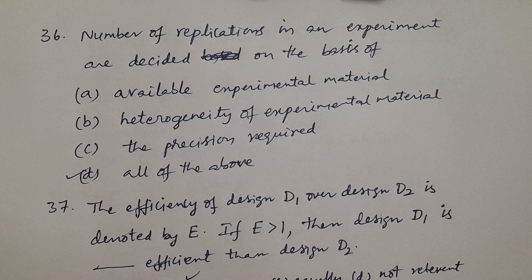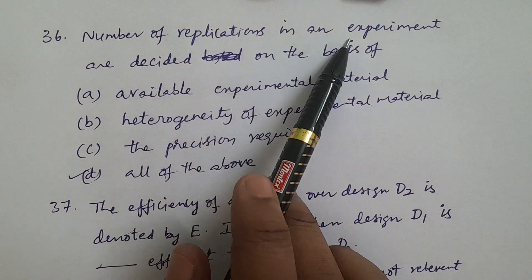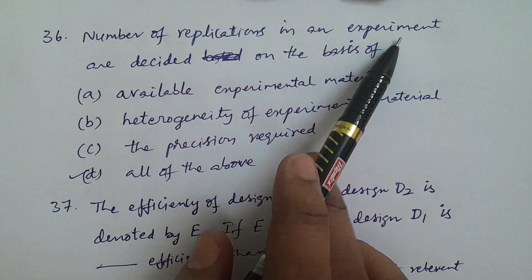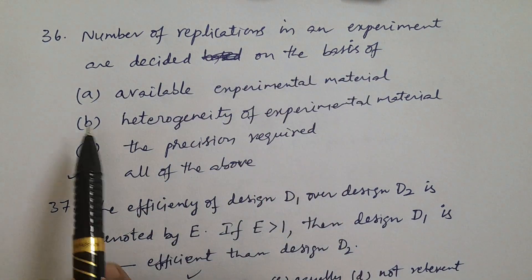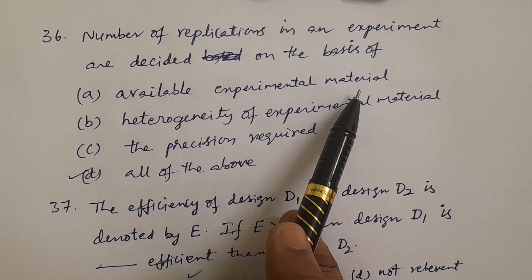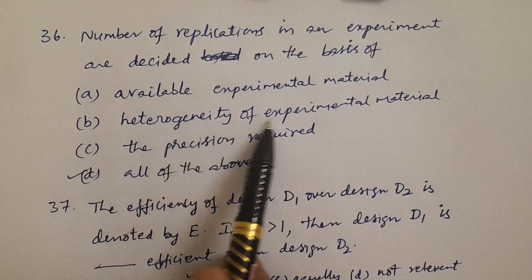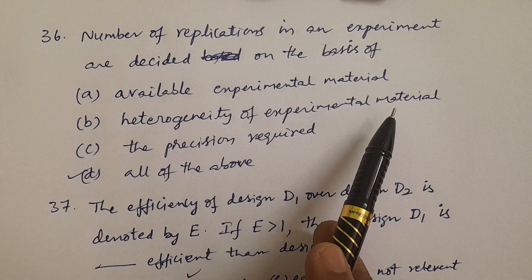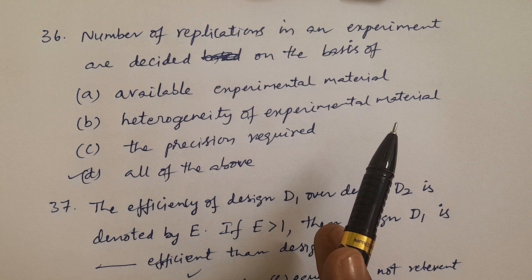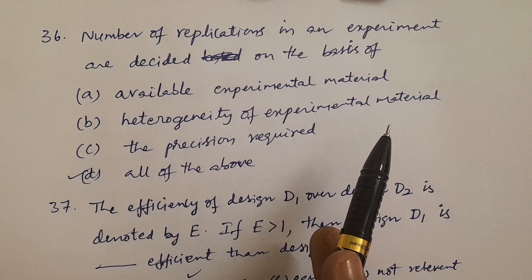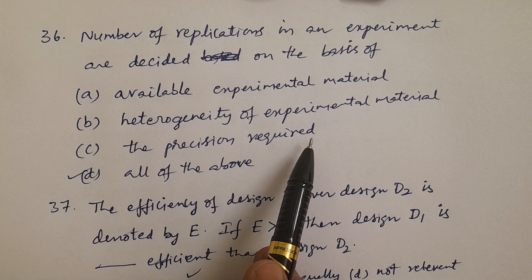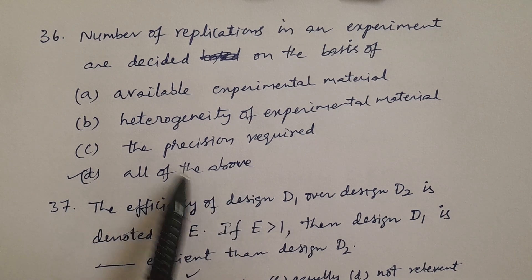Question number 36: Number of replications in an experiment are decided on the basis of — A: available experimental material, B: heterogeneity of experimental material, C: the precision required, D: all of the above. The answer is all of the above.